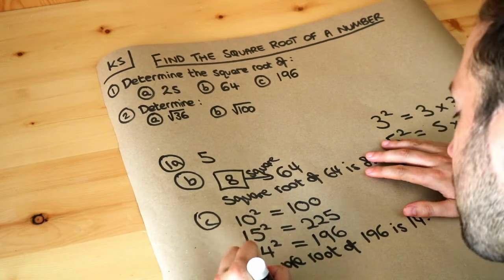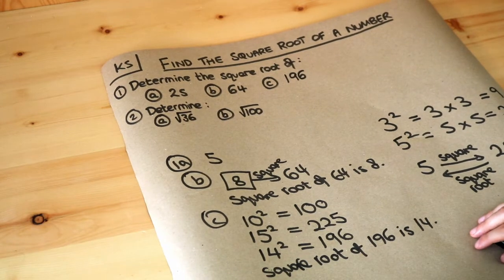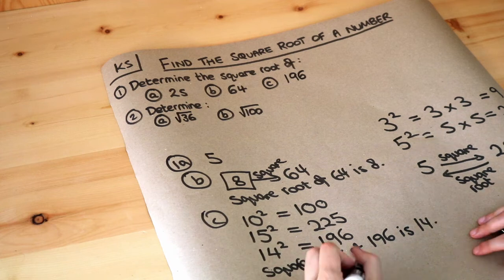So 2a, the square root of 36, well what number squared, what number times by itself, gives you 36? Well it's 6, 6 times by itself, 6 times 6 is 36.